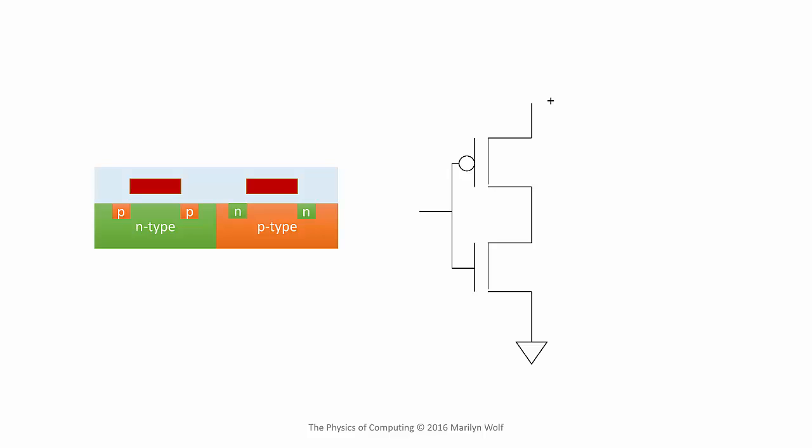A CMOS inverter consists of one N-type transistor, which is known as the pull-down, and one P-type transistor, which is known as the pull-up.